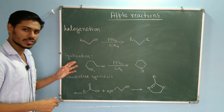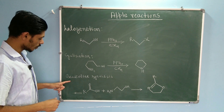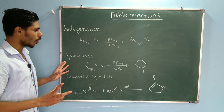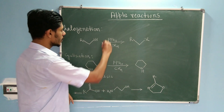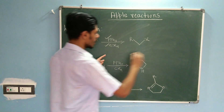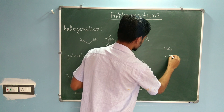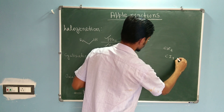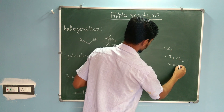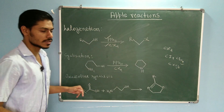There are three variations of the Appel Reaction. One is Halogenation, the second one is Cyclization, and the third one is Oxazoline Synthesis or Oxazoline Ring Synthesis. In all of these reactions, the common reagent is Triphenylphosphine (PPh3) and some Carbon Tetrahalide — CX4 — which can be CI4, CBr4, or CCl4.